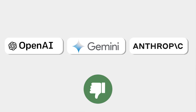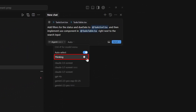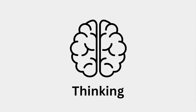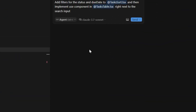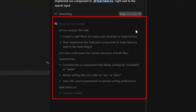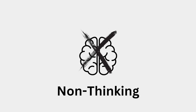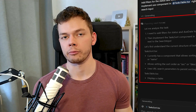Cursor now auto-selects a model for you, but from my experience this doesn't generate the best results. This is why I select the model myself, and for complex tasks like changing code in different files, I always select a thinking model. My favorite at the moment is Claude Sonnet 3.7. Thinking means that the AI first generates a bunch of ideas and then reflects on these ideas before it actually generates the final solution, whereas non-thinking models just spit out their first idea immediately. You can even see these thoughts in the AI chat in a separate view, which is really cool.